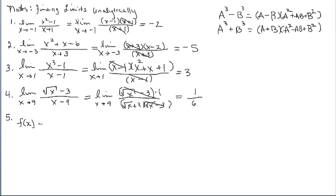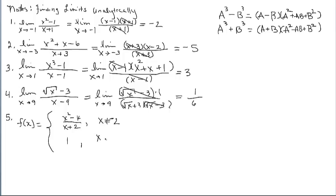For problem 5, we're going to work with piecewise functions. Our first piece is going to be a rational function, and we're told this function is not defined at negative 2 — x cannot be negative 2, which makes sense because then we'd be dividing by 0. The other piece is y equals 1 whenever x is negative 2, which means the point negative 2, 1 is on the graph.